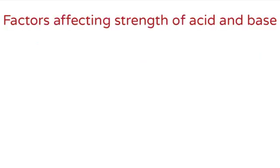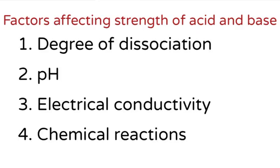From there we need to know factors that affect the strength of acid and base. Their strength is affected by four factors: number one, degree of dissociation; number two, pH; number three, electrical conductivity; number four, chemical reaction.